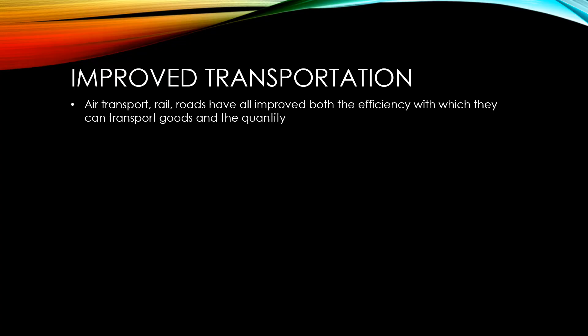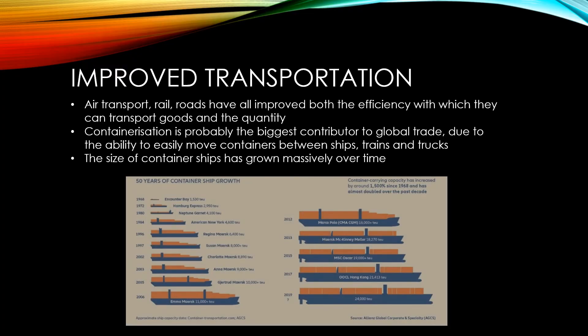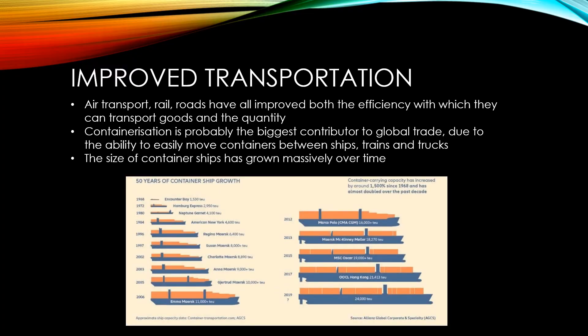Containerisation, which is the use of standard size containers that can be easily moved between ships, trains and trucks, was probably the biggest contributor to global trade. As you can see, the size of container ships has grown massively over time, allowing them to take advantage of economies of scale, meaning that far more goods can be moved at a far lower price.